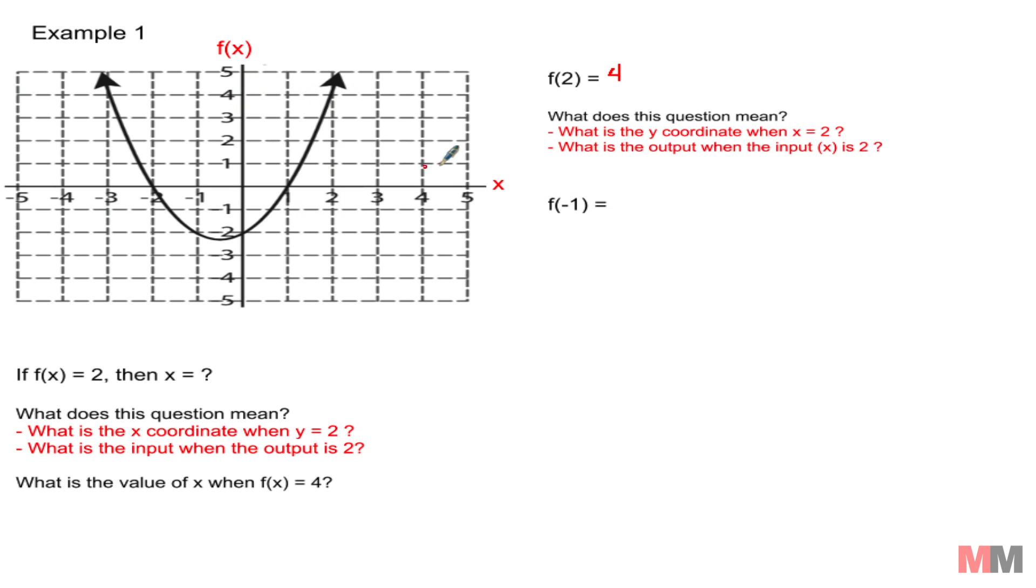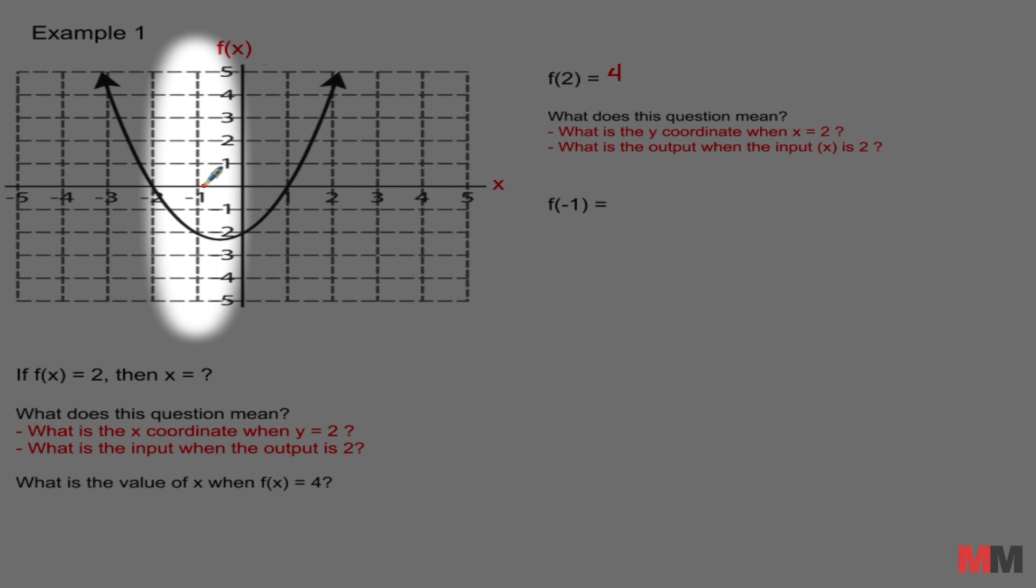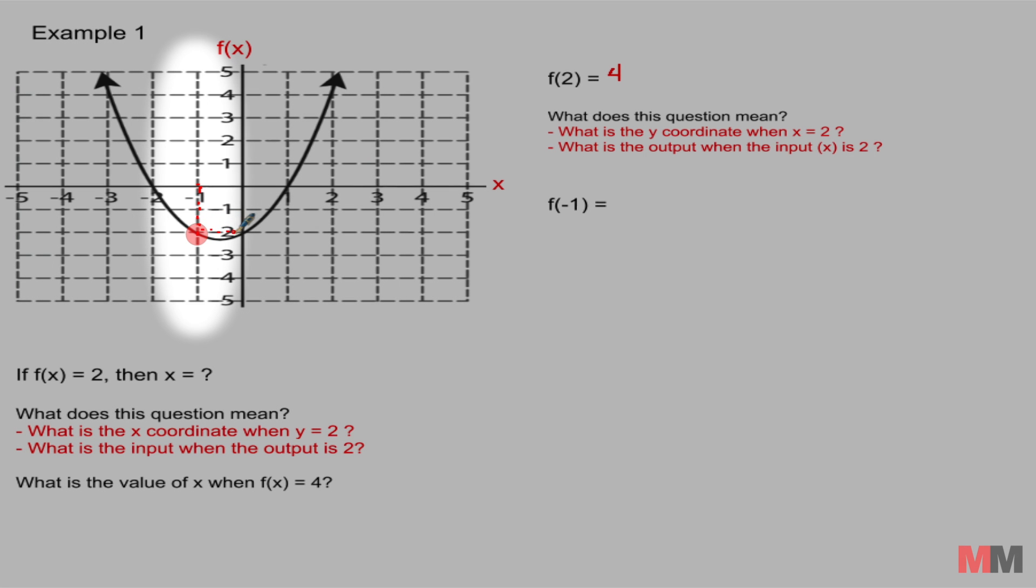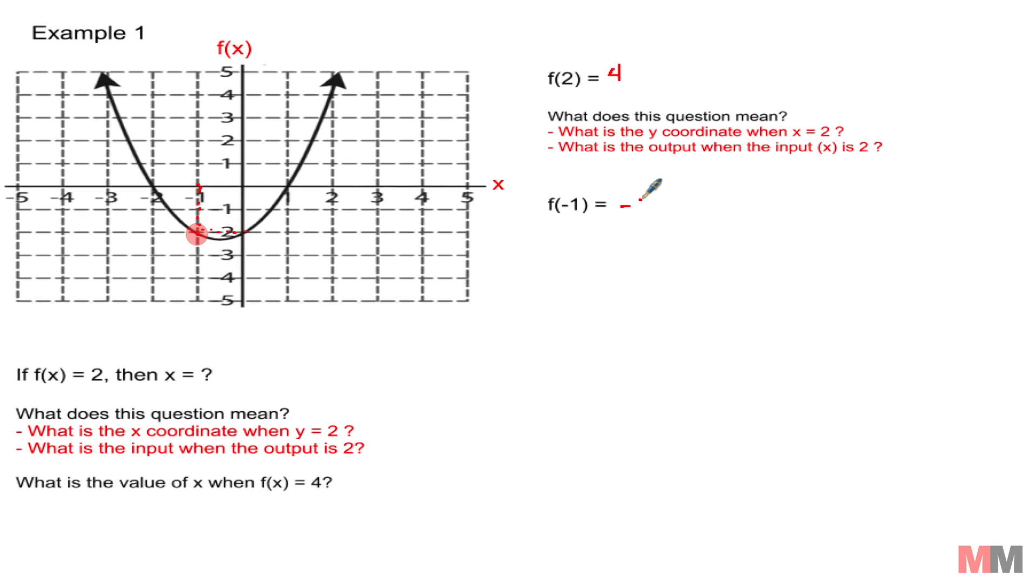f of negative 1. Start with the x value at negative 1. Scan through the x axis until you get to negative 1 and the graph is right below here. So once you get to the graph, all you have to do is read the y value which is negative 2.